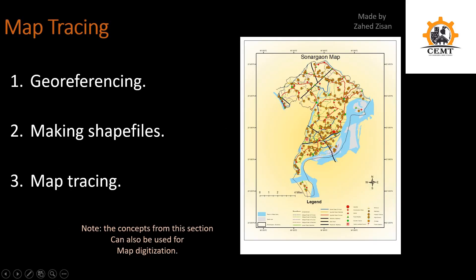The next section is the map tracing section. Here we'll see how to trace an existing map to add georeferencing, update it, or create a digital version. For example, if you have a hand-drawn map, you can photograph it, put it into the software, do georeferencing to assign locations, then trace it to make a digital version. The three videos cover georeferencing, making shapefiles, and tracing — knowledge also applicable to map digitization.